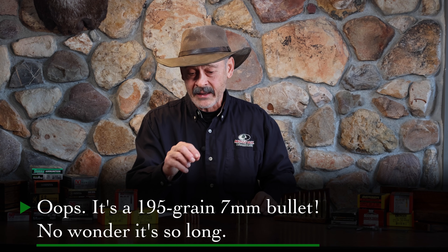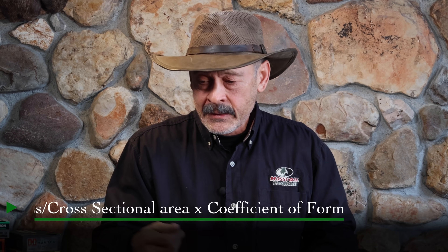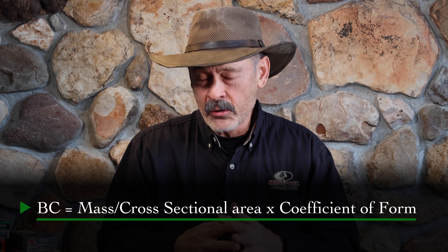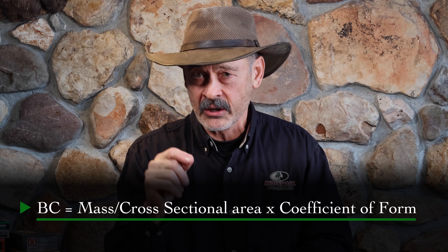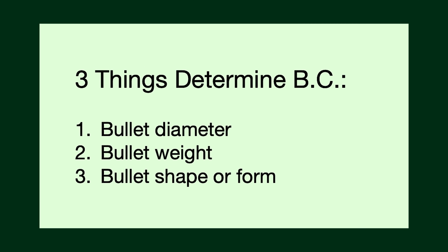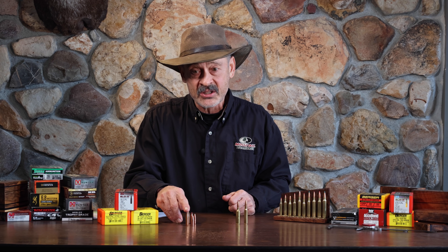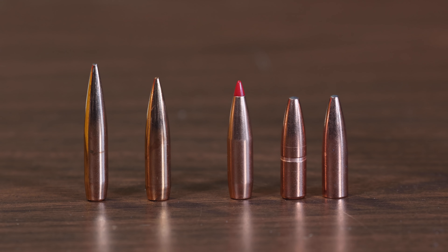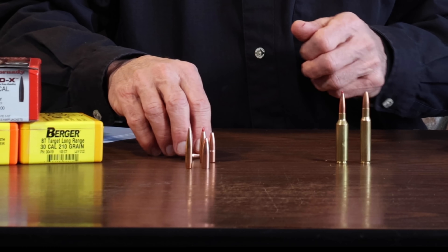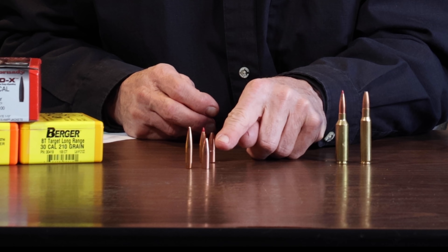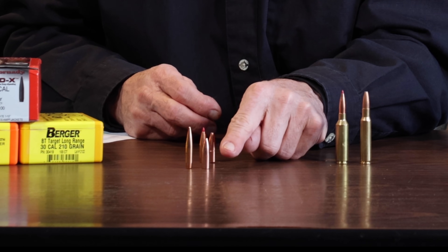This brings us to what exactly makes ballistics coefficient. It's a mathematical number — they do some fancy calculations — but here's what they have to consider: the caliber of the bullet, the weight of the bullet, and the shape of the bullet. Those are the three things that make up the ballistics coefficient. And there's pretty much the visual explanation of the difference between a high BC bullet and a standard, not-so-high BC bullet. If you were to add a round nose or flat nose bullet, that would be shorter and have even more drag — a lower BC.